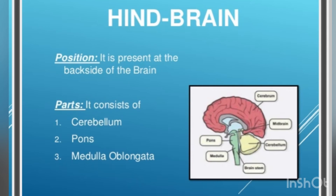Hindbrain position: it is represented at the back side of the brain. Parts: it consists of the cerebellum, pons, medulla oblongata, and genta.